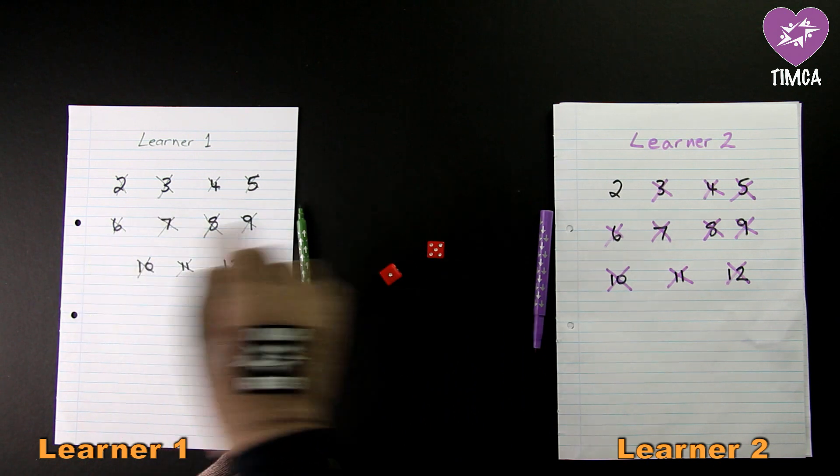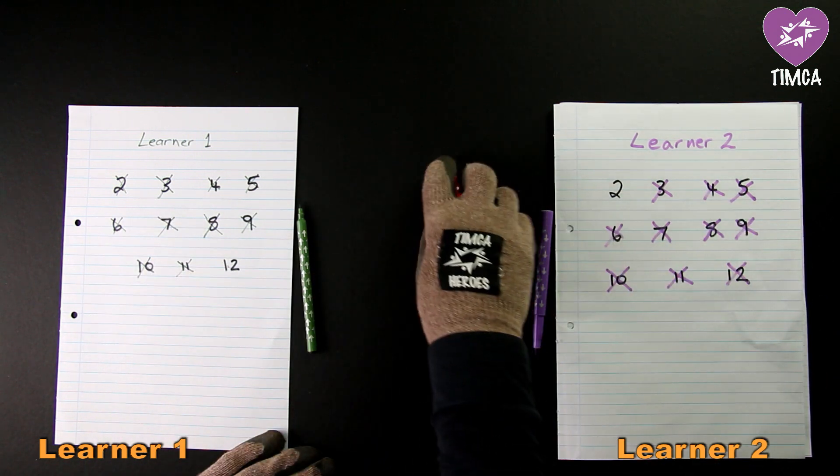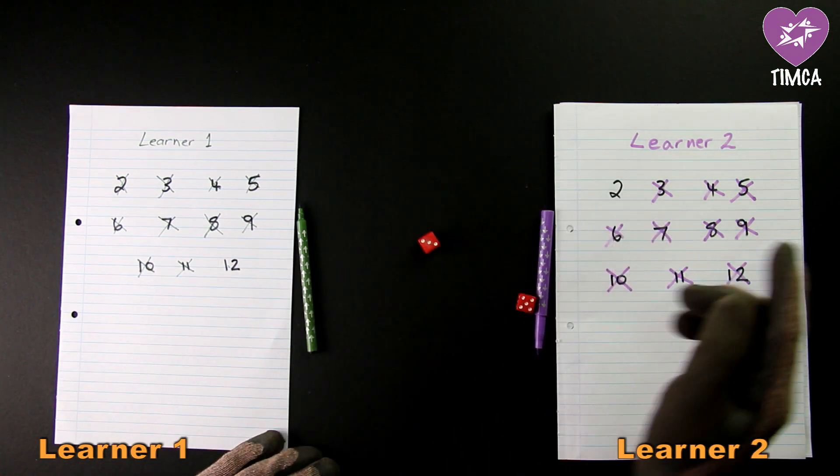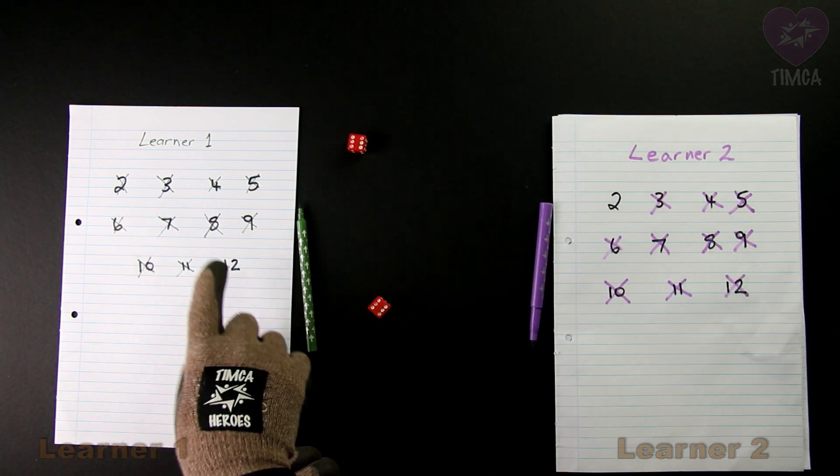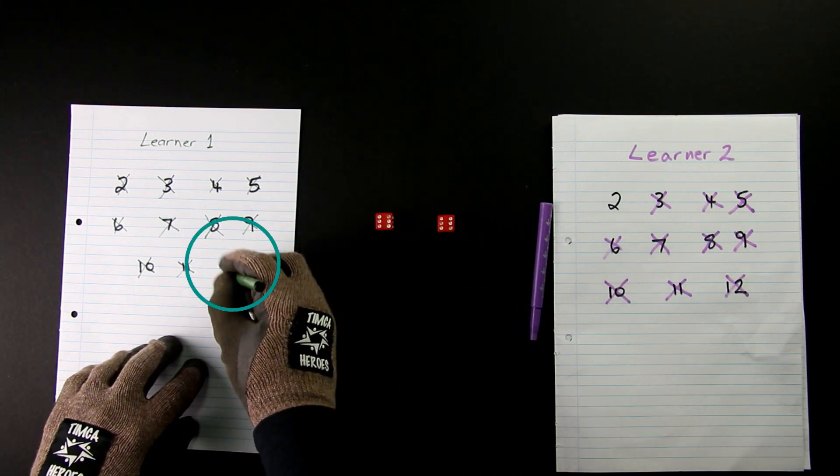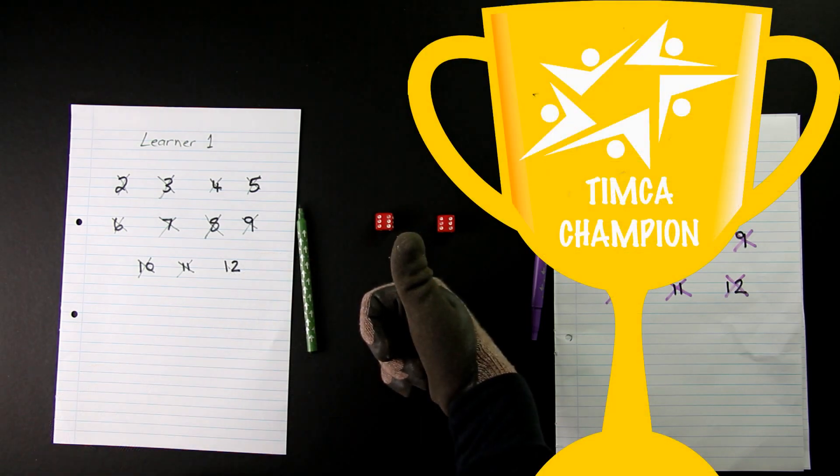Now we are approaching the end of the game and learner one needs a twelve and learner two needs a two. Learner one throws a twelve. Yes a six and a six is equal to twelve and they cross that out and they win the game. Learner one is the Timka champion.